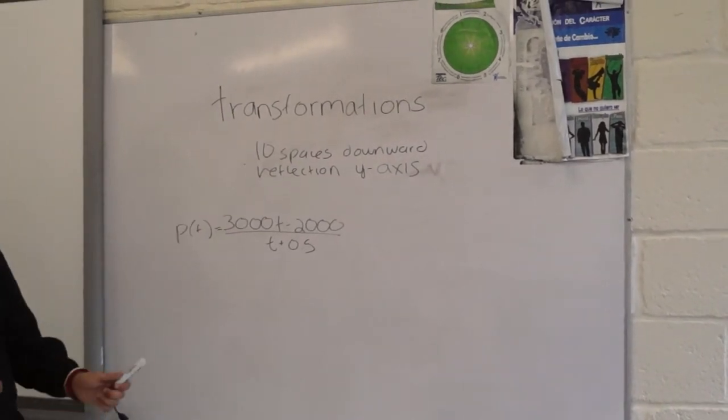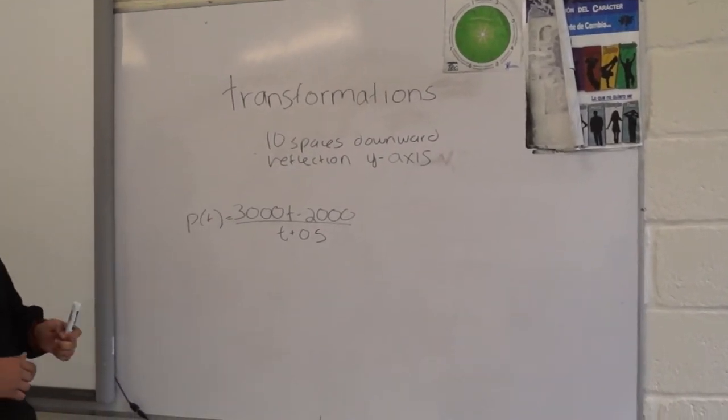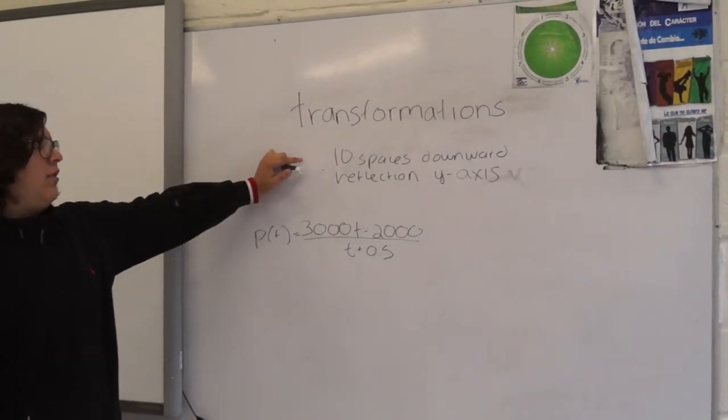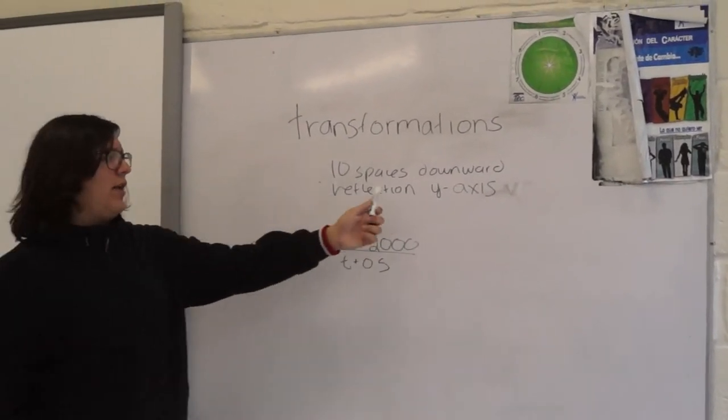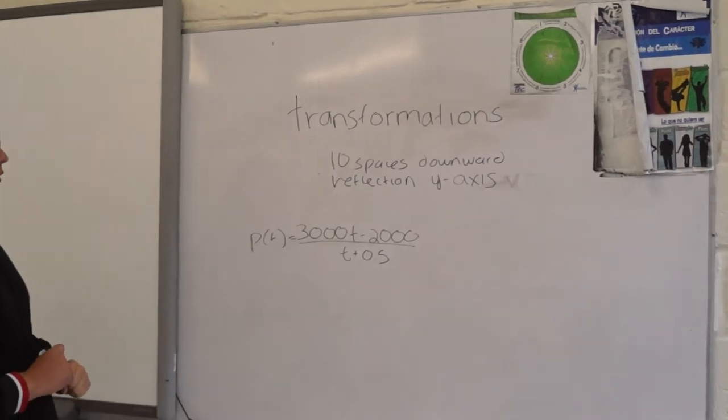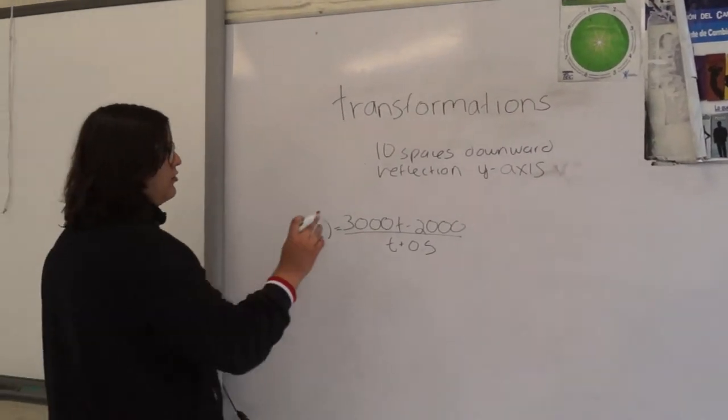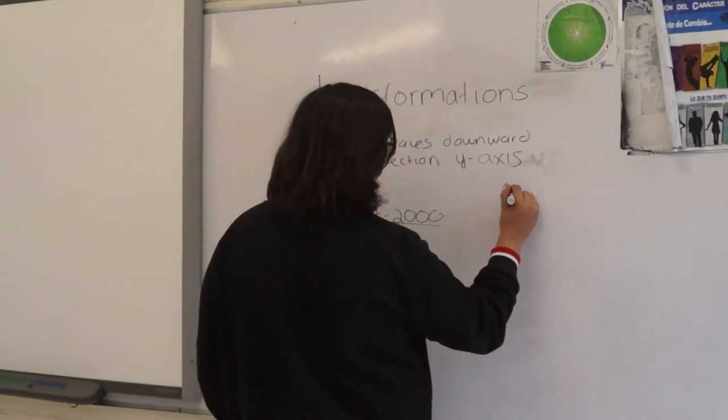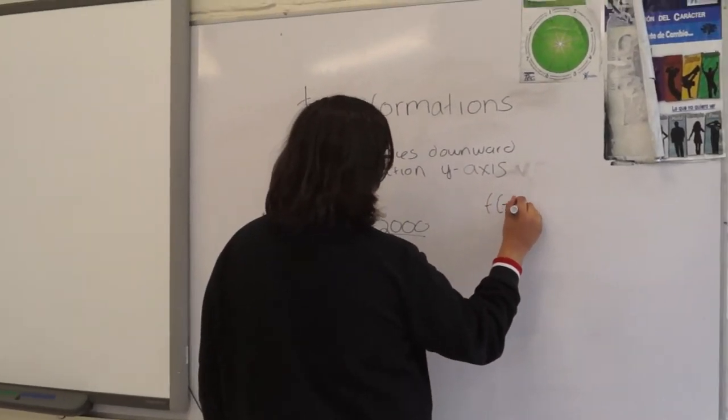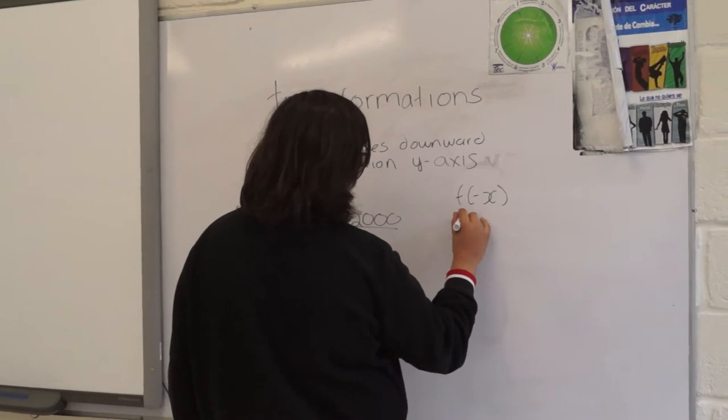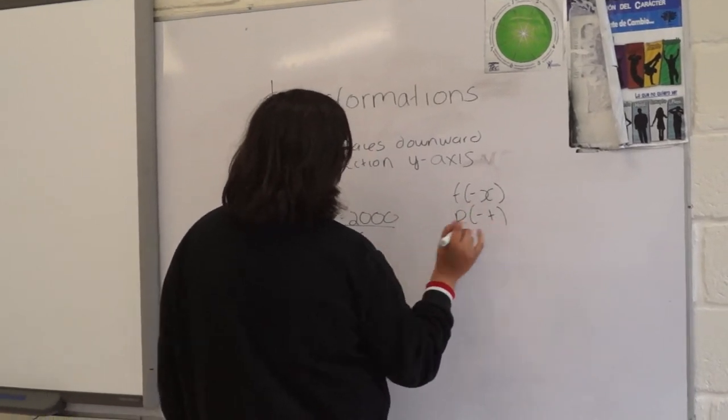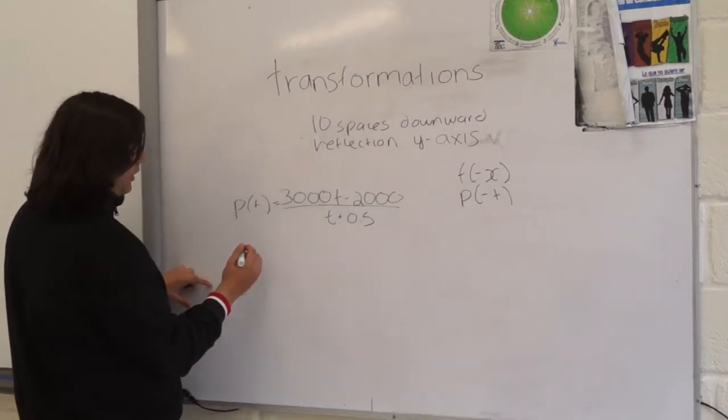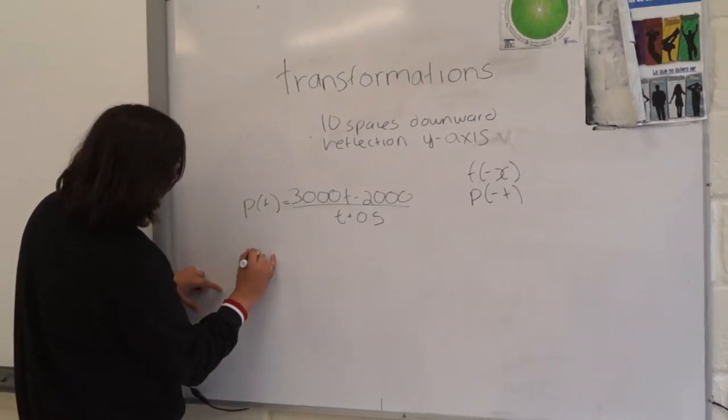Let's see transformations. We are going to make transformations to this original graph: 10 spaces downward and reflect it on the y-axis. So for the reflection of the y-axis, it is f of minus x, in this case it would be P of minus T, so we are going to replace T with minus T. So our new equation would be...